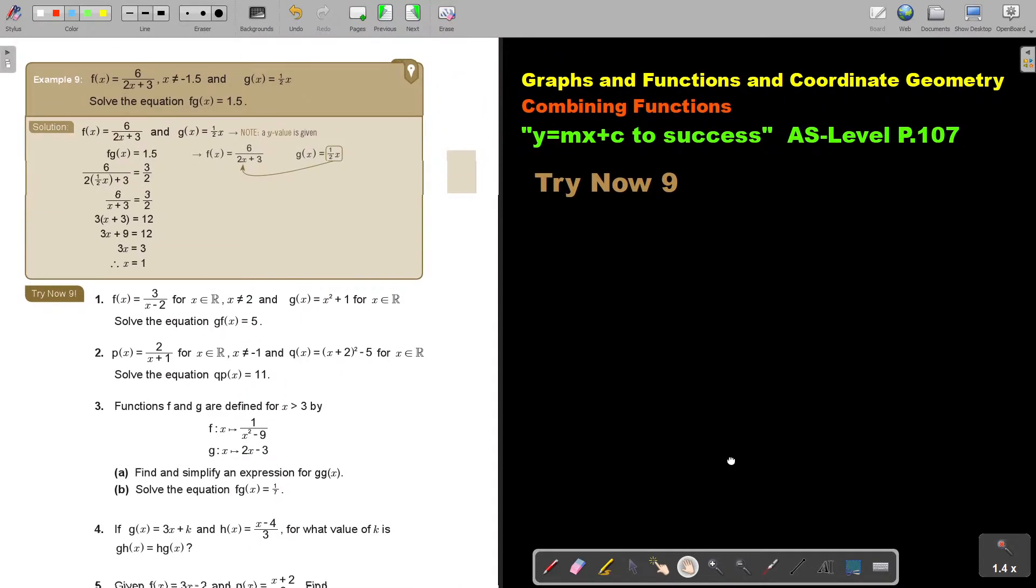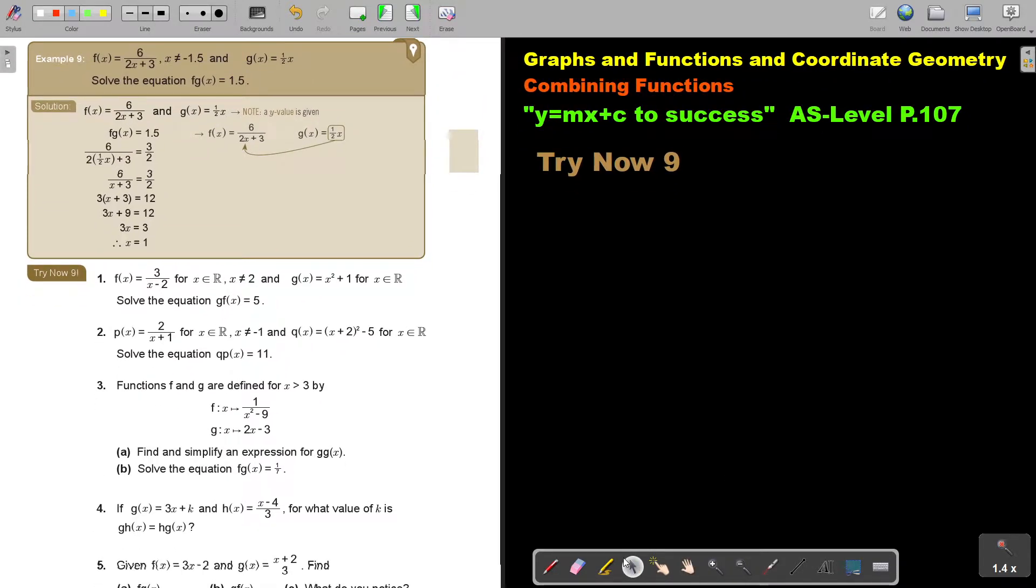Let's look at another example. f of x is this function. x cannot be negative 1.5. This is very important that you understand that, because if it's negative 1.5, this will become negative 3, and negative 3 plus 3 is 0, and that will give you 6 divided by 0, which is undefined.